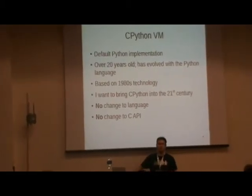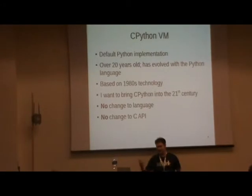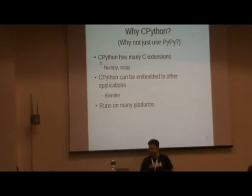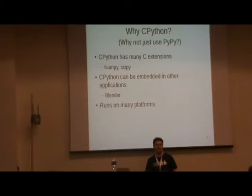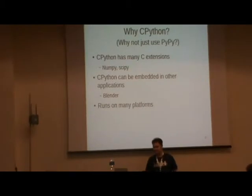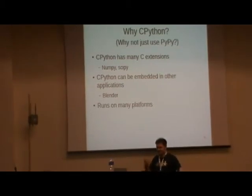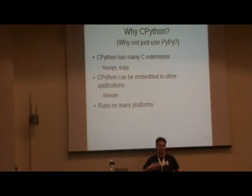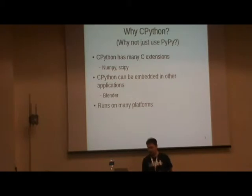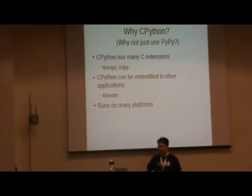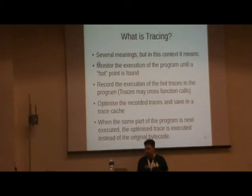The constraints are: no change to the language, and no change to the C API. So why use CPython rather than PyPy? PyPy is fast — as anyone who attended the PyPy talk knows. PyPy has demonstrated that Python can be made fast. But PyPy can't be embedded, or at least not yet. It doesn't support extensions well. There are a bunch of reasons. CPython is widely used, has huge momentum, and runs on many platforms. PyPy may eventually support all of those goals, but it doesn't yet.